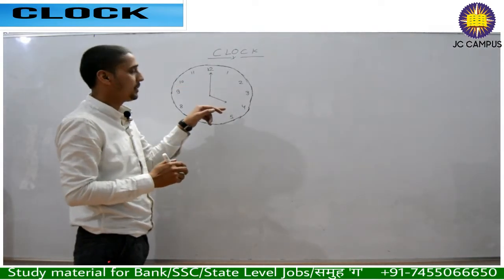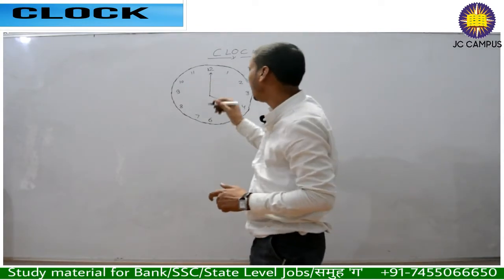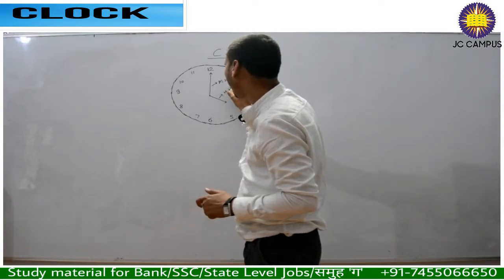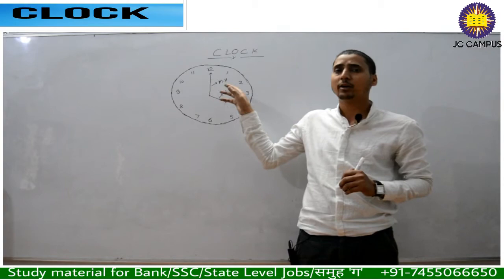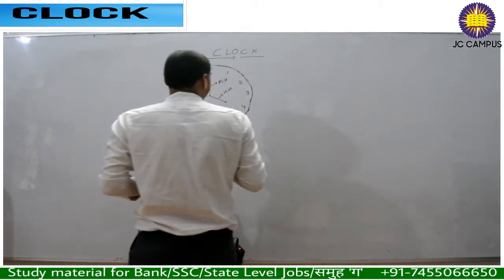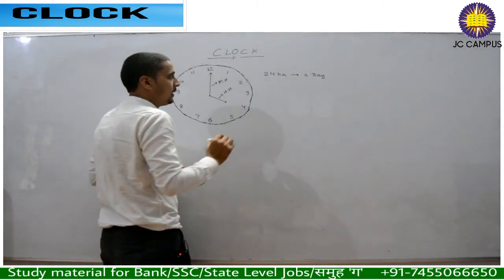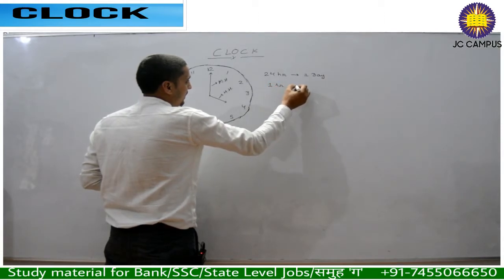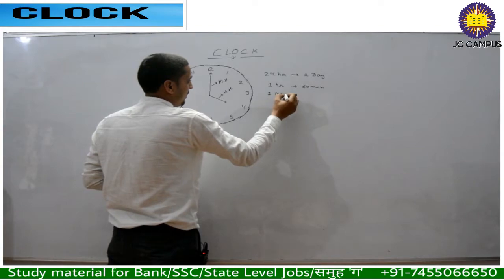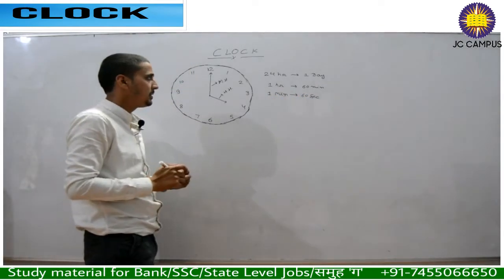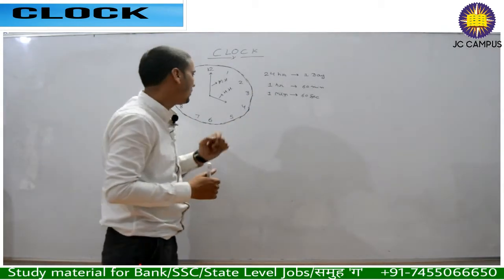You know how to tell time. For example, if it is 4 o'clock. The basic questions that come are about the angle between the minute hand and the hour hand. First, let's look at some basic things: 24 hours make one complete day, one hour has 60 minutes, and one minute has 60 seconds.